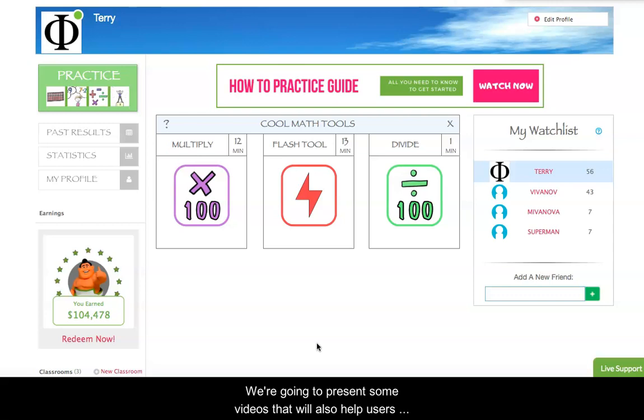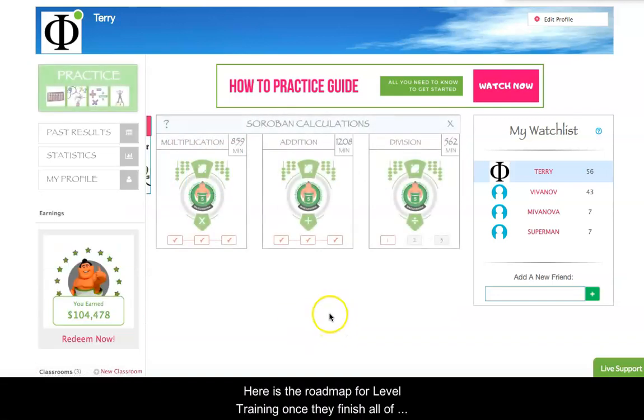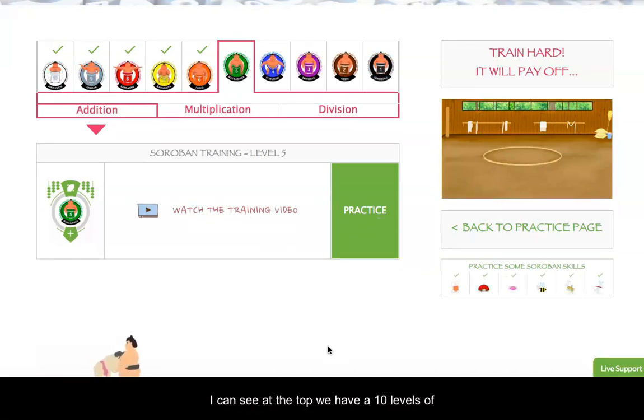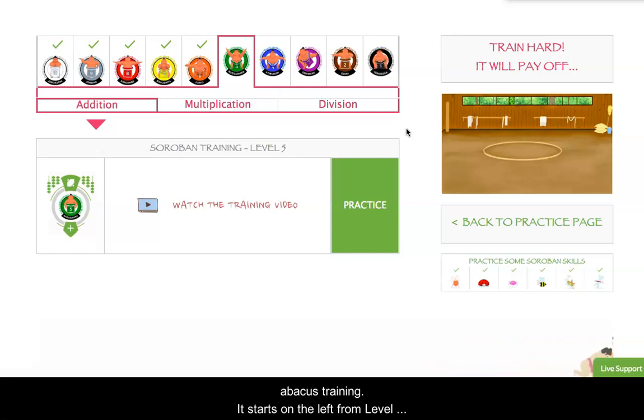So we're going to be presenting some videos that will also help users who advance on to our level training, which I'll just give you a quick preview of the roadmap for level training. So once they finish all of their skill training, then here we can see at the top we have 10 levels of advanced abacus training. And it starts on the left from level 10 and works all the way over to level one on the right, which is the highest level, the Yokozuna level if you will. But as you can see, you're training in addition, subtraction problems, multiplication and division. And as usual, each level will have a training video to go over the techniques for that level.